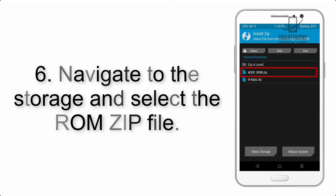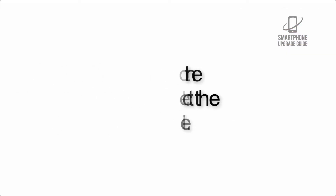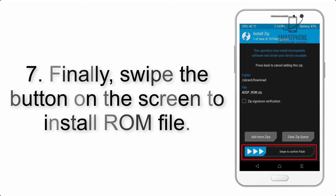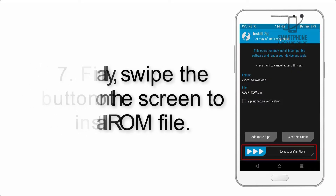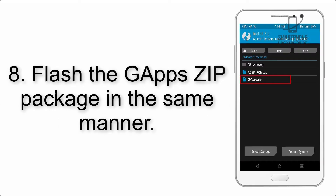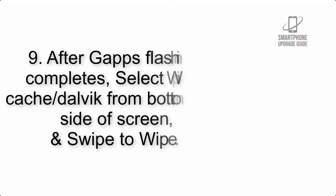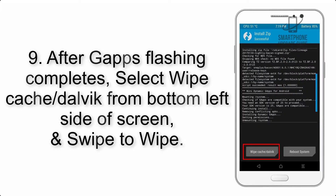Step 6: Navigate to the storage and select the ROM zip file. Step 7: Swipe the button on the screen to install the ROM file. Step 8: Flash the GApps zip package in the same manner.